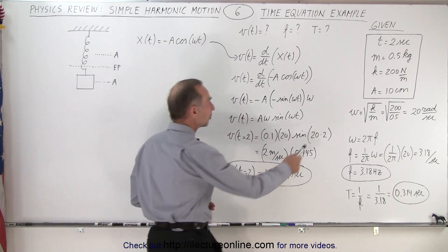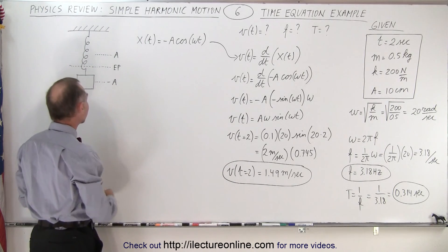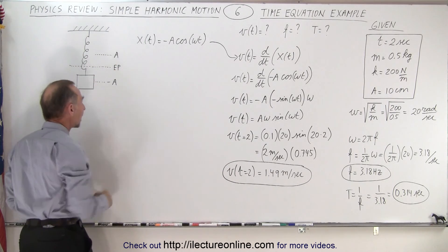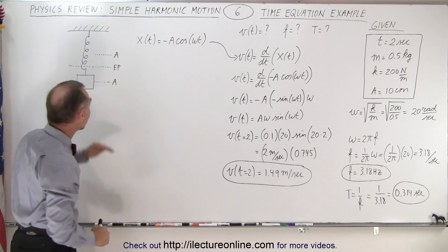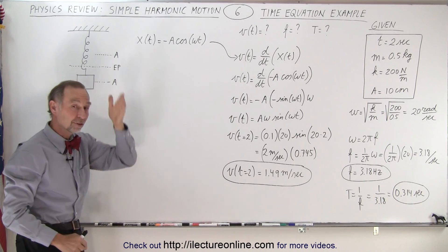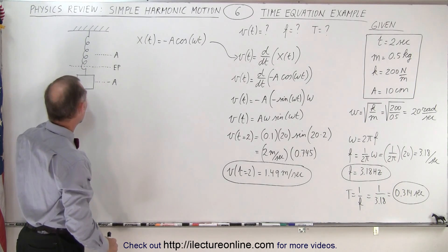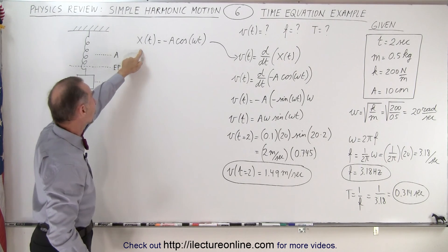We're given some parameters. We have an object with a certain mass hanging from a spring with a spring constant k that's oscillating up and down. And at time equals zero, it is at its maximum extent in the negative direction. Now here, since we're going vertical, this is positive, this is negative.